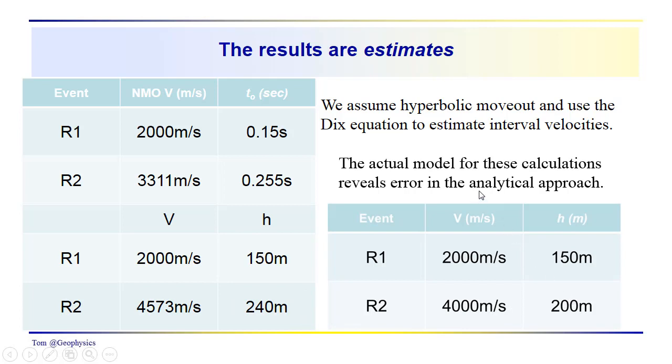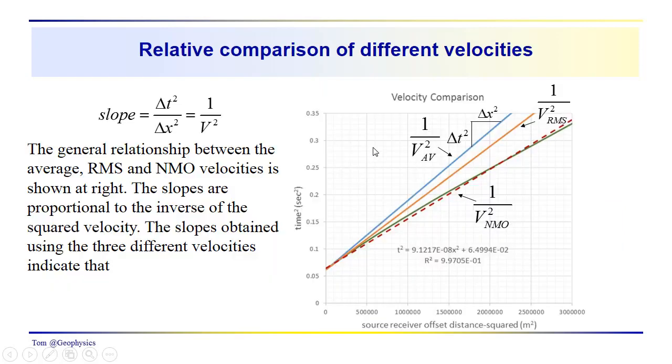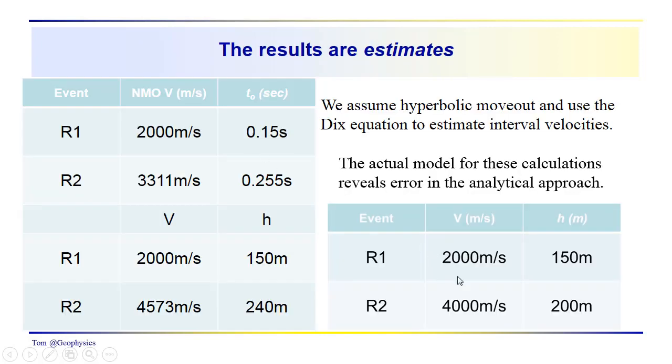So this is the inherent error in this Dix equation that we've been talking about, something to keep in mind. So now what we're going to do, well, you might come back to this and ask yourself, can you get the average velocity?